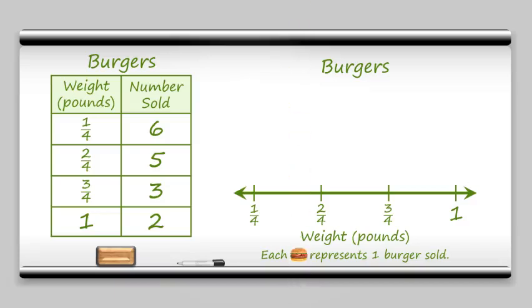So moving right along. In the 1/4 spot, we have 6 burgers. So we're just going to go ahead and place 6 burgers above the 1/4 spot. Moving to the 2/4 spot, we have 5 burgers. And 3/4, we have 3. And in the 1 spot, we have 2.